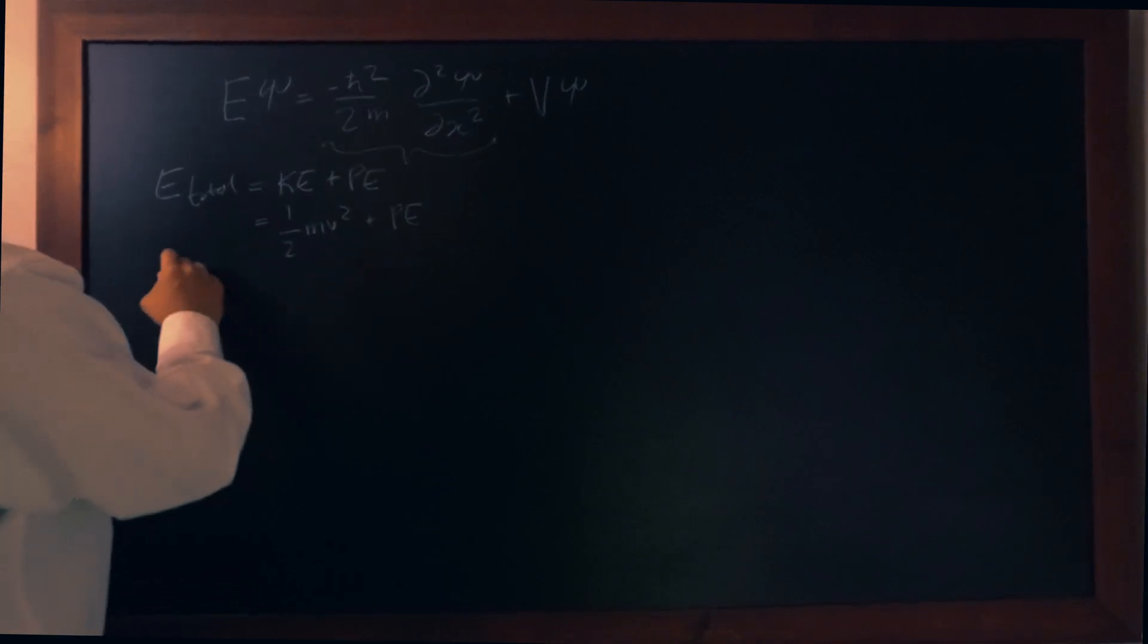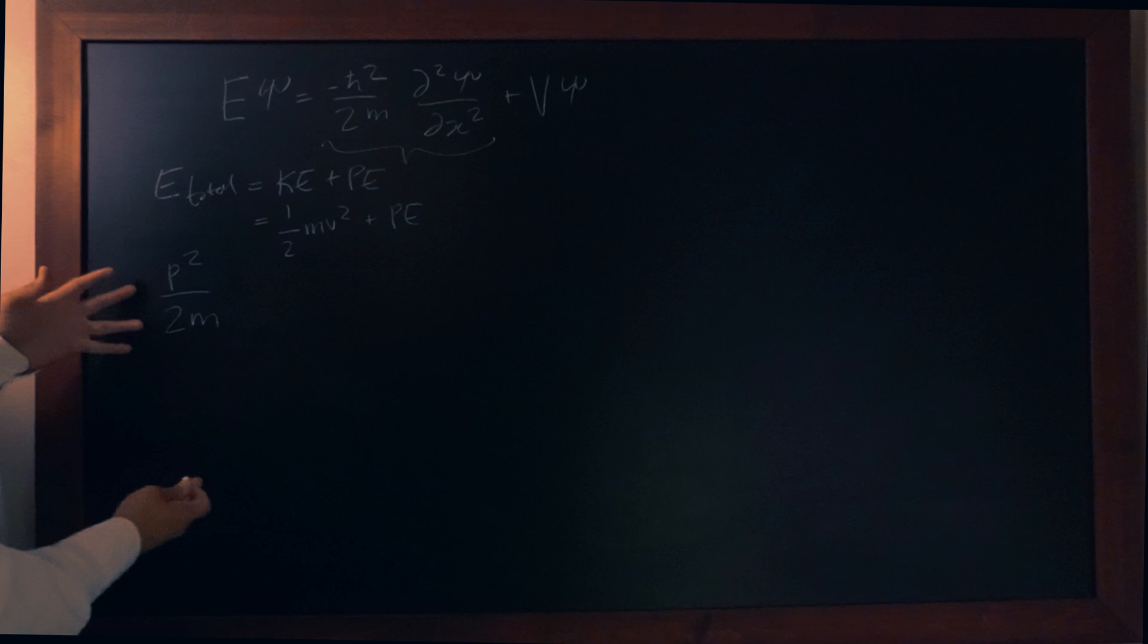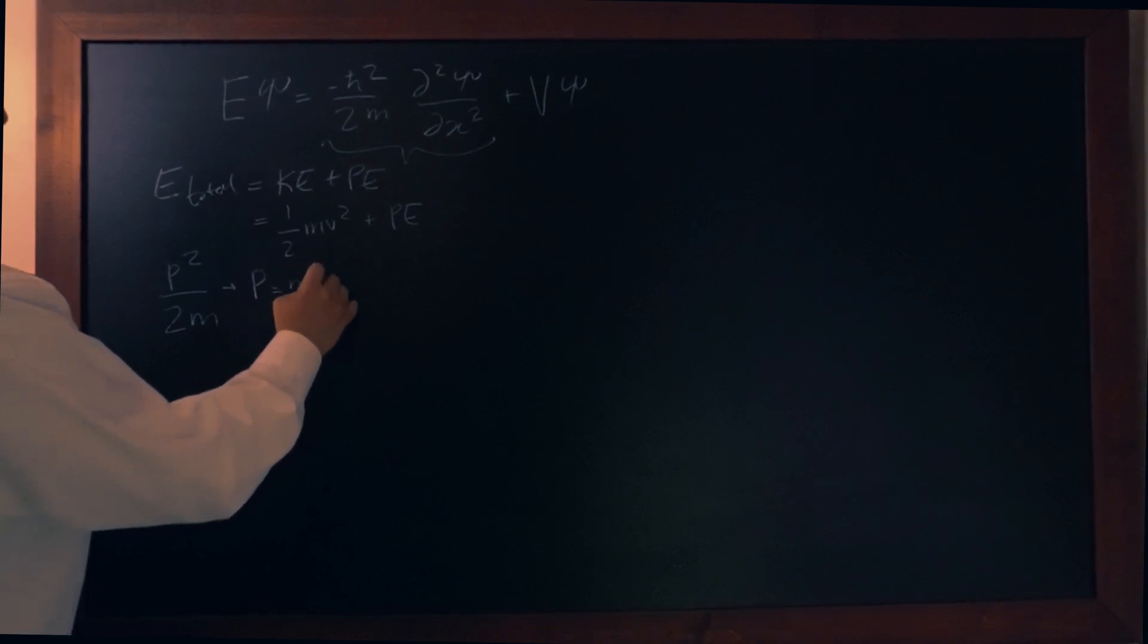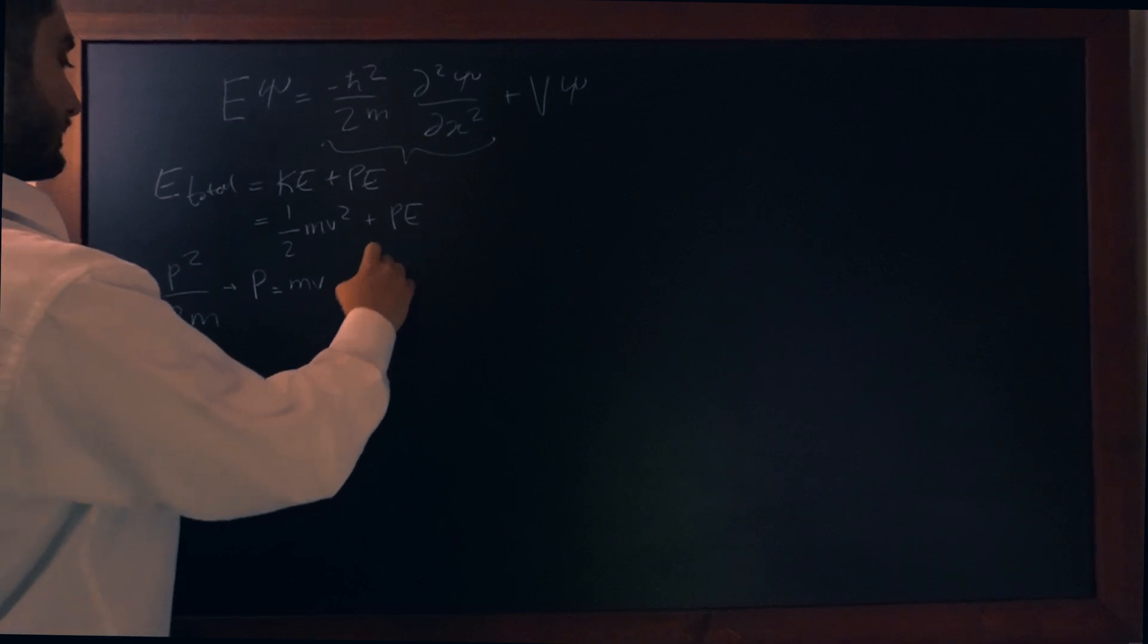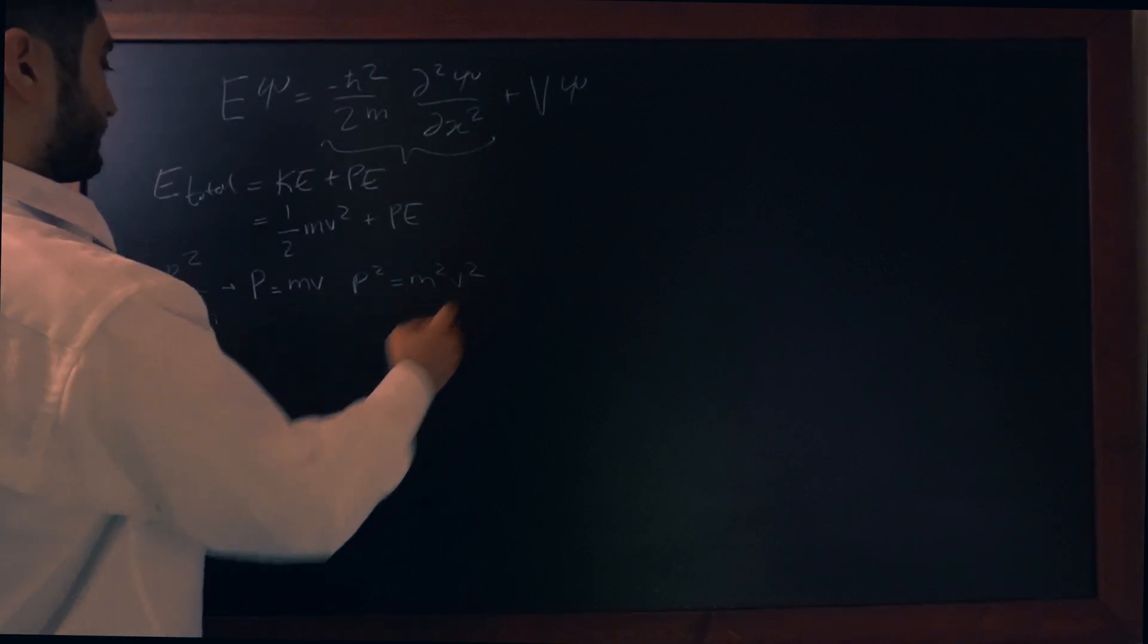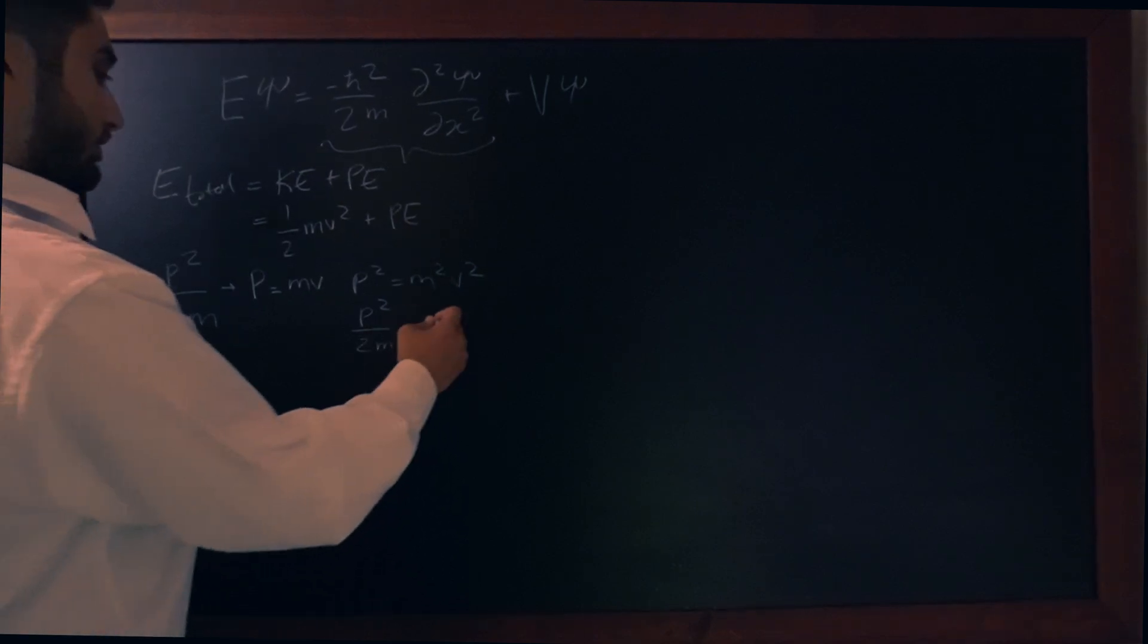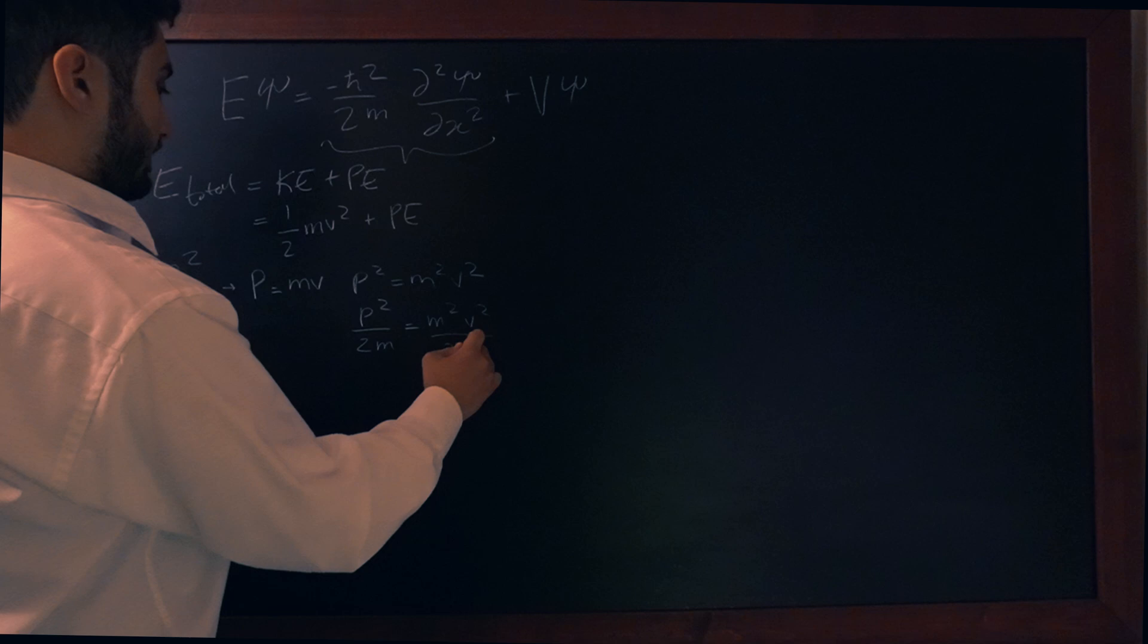Another way of saying half mv squared is saying p squared over 2m. So how do we get this? p is the momentum and it's equal to the mass times the velocity. And so p squared is equal to m squared v squared. And so p squared over 2m is the same as half mv squared.